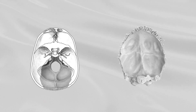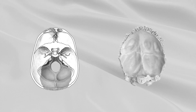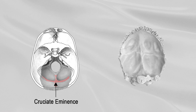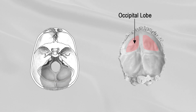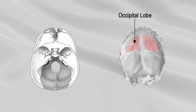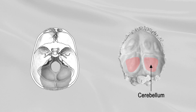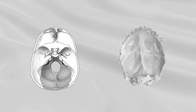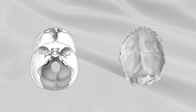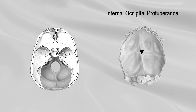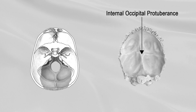The internal surface is deeply concave and divided into four fossae by a cruciate eminence. The upper two fossae are triangular and lodge the occipital lobes of the cerebrum. The lower two are quadrilateral and accommodate the hemispheres of the cerebellum. At the point of intersection of the four divisions of the cruciate eminence is the internal occipital protuberance.